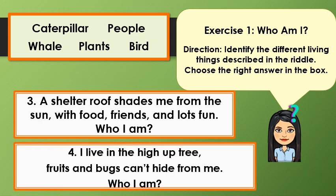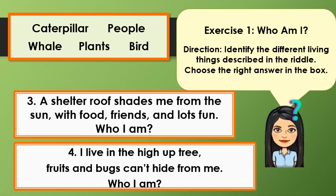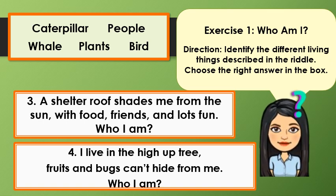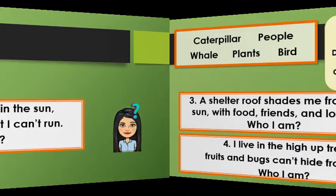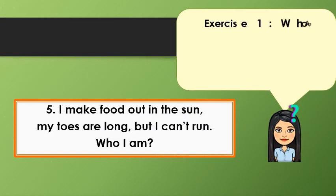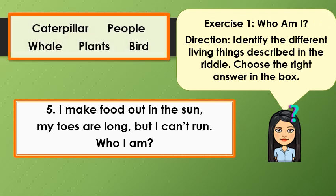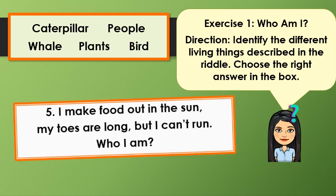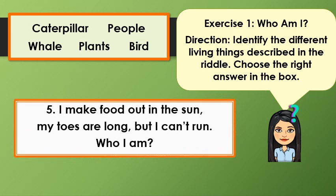I live high in the trees. Fruits and bugs can't hide from me. Who am I? Number 5: I make food out in the sun. My toes are long, but I can't run. Who am I?